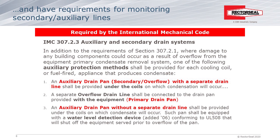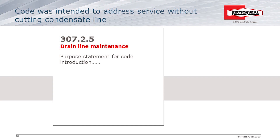Both methods three and four notify the building occupants that a blockage has occurred because the cooling system will cease to function. The exception recognizes that some fuel-fired appliances that produce condensate will have a built-in method of shutting down when a blockage occurs. The IMC commentary was recently updated and will be available in the 2021 edition, which elaborates a lot more on the importance of proper maintenance and what is behind the intent of this code section.